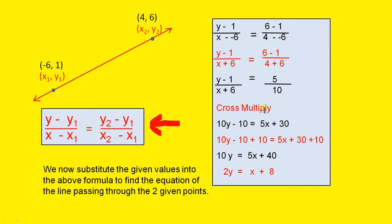Now, we do the cross multiplication that we saw earlier. So we multiply 10 by y minus 1, which is 10y minus 10. There it is there. 10y minus 10. We multiply 5 by x plus 6. And that gives you 5x plus 30.